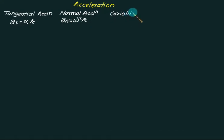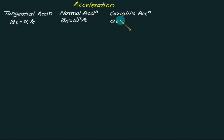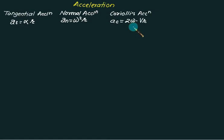Then we have the Coriolis component of acceleration. We have not discussed this yet and will prove it later. It is given by two times v multiplied by omega, where v means radial velocity and omega is the angular velocity.